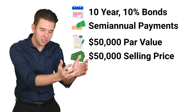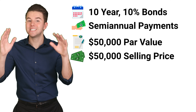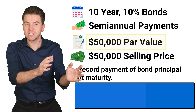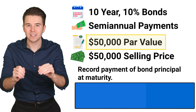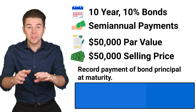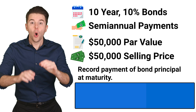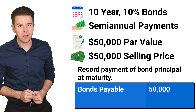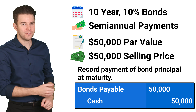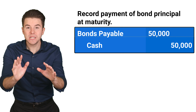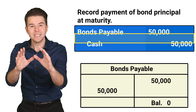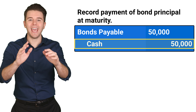When the bond reaches its maturity date at the end of its 10-year life, we need to record the payment of principal or PAR value of $50,000 to the holder of the bond. To record the maturity of the bond, we debit bonds payable for $50,000 and credit cash for $50,000. The debit to bonds payable removes the liability and the credit to cash reduces that asset account.